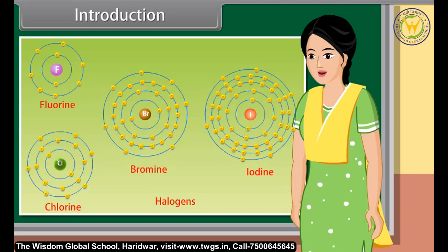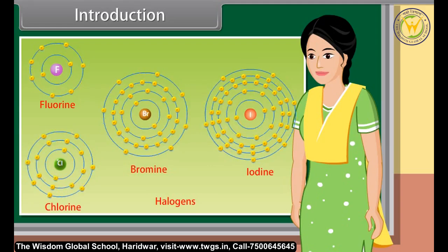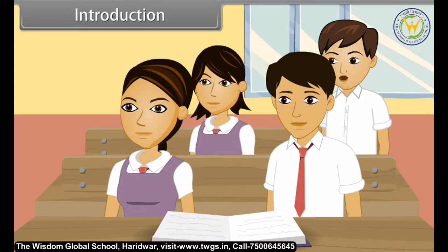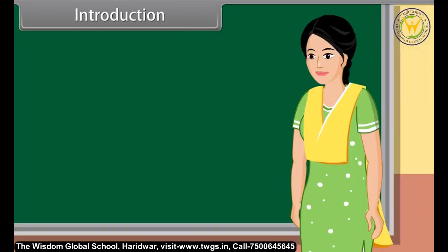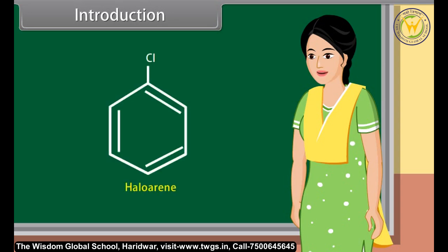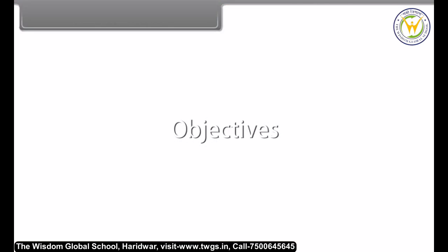Haloarenes are the molecules in which halogen atoms are bonded with carbon atoms that are part of an aryl ring. Very good, Rohit. In this lesson we will learn more about haloalkanes and haloarenes.